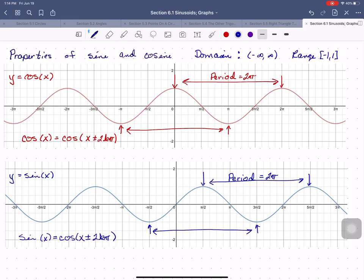Now, there's one other difference. Cosine is what we call an even function. What that means is, notice that there's symmetry across the y-axis.